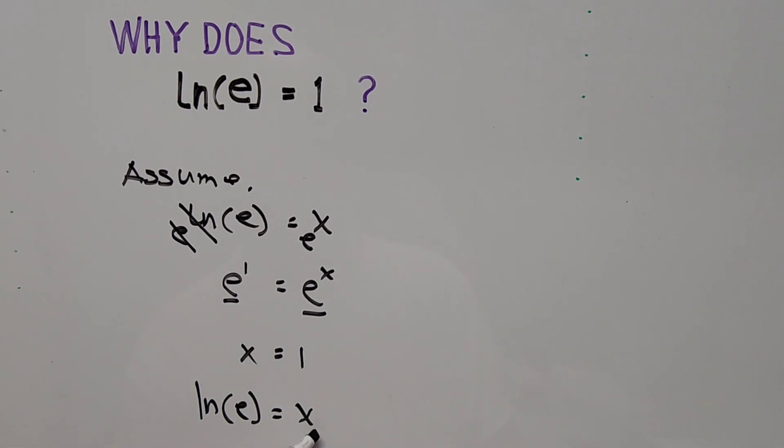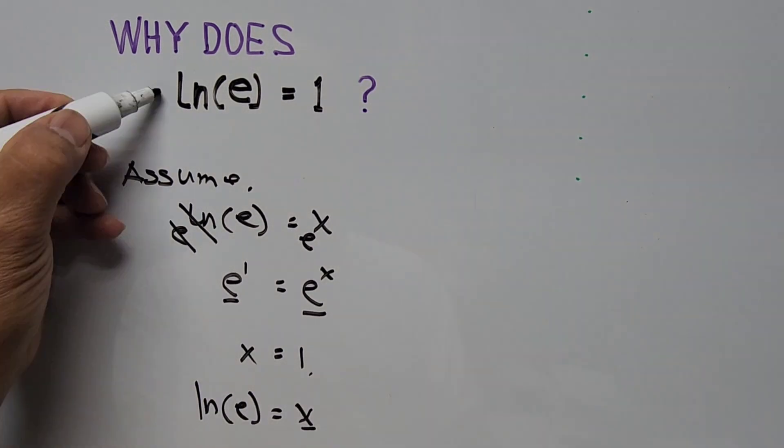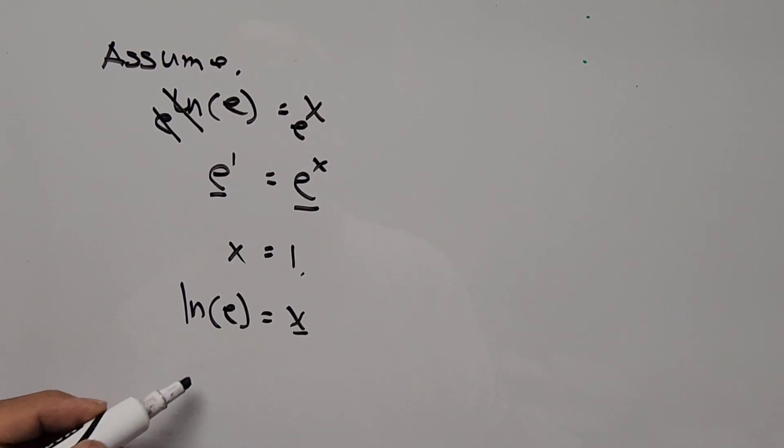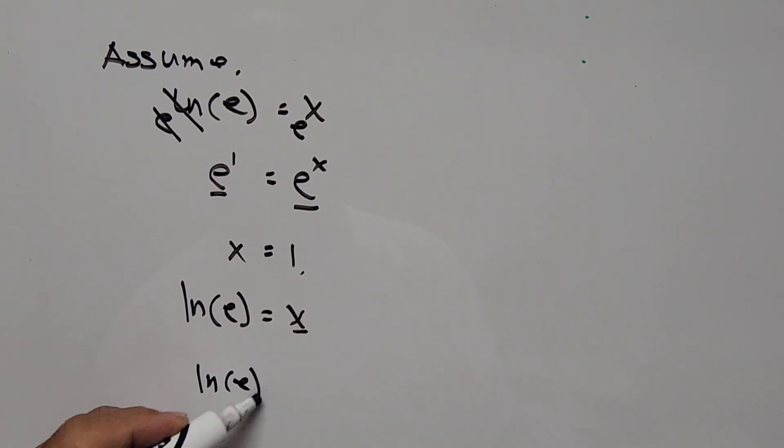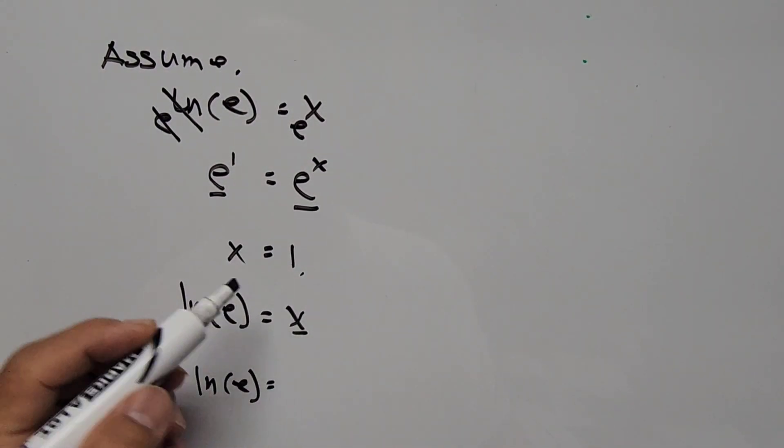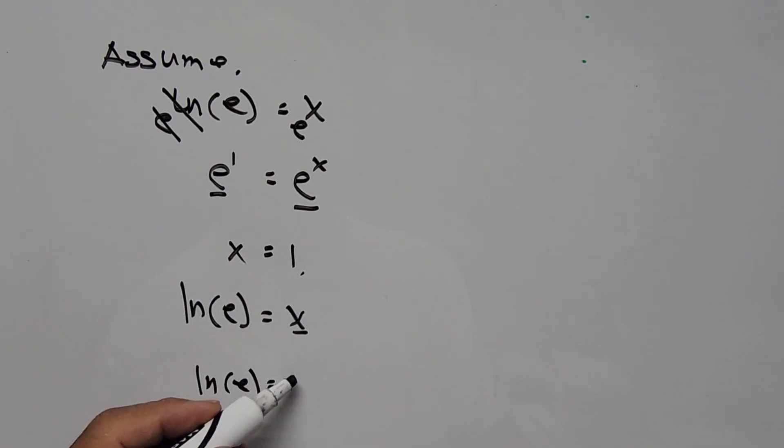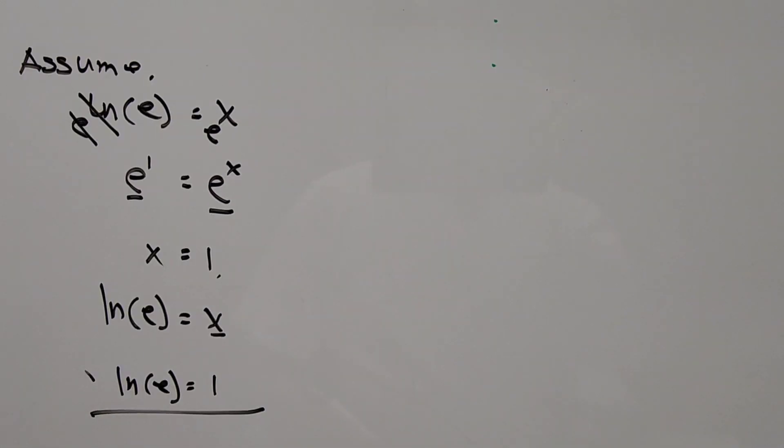And since we got x is equal to 1, therefore from our equation above, ln(e) is x. So x is equal to 1, so that's our proof: ln(e) is equal to 1.